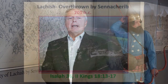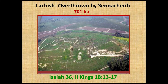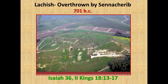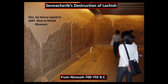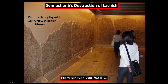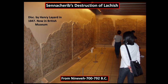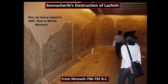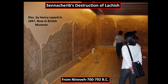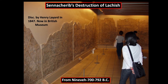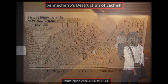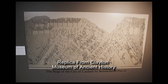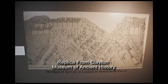Lachish was overthrown by Sennacherib on this same invasion in 701 BC. You can read about this in Isaiah 36 and 2 Kings chapter 18. It's such a significant conquest that on Sennacherib's palace wall, he had inscriptions and a relief made covering a great amount of his palace. This was discovered by Austin Henry Layard in 1847, and it's now in the British Museum — found in Nineveh, dating back to around 700 years before Christ. You can see the various aspects of the siege and destruction of Lachish in Israel.